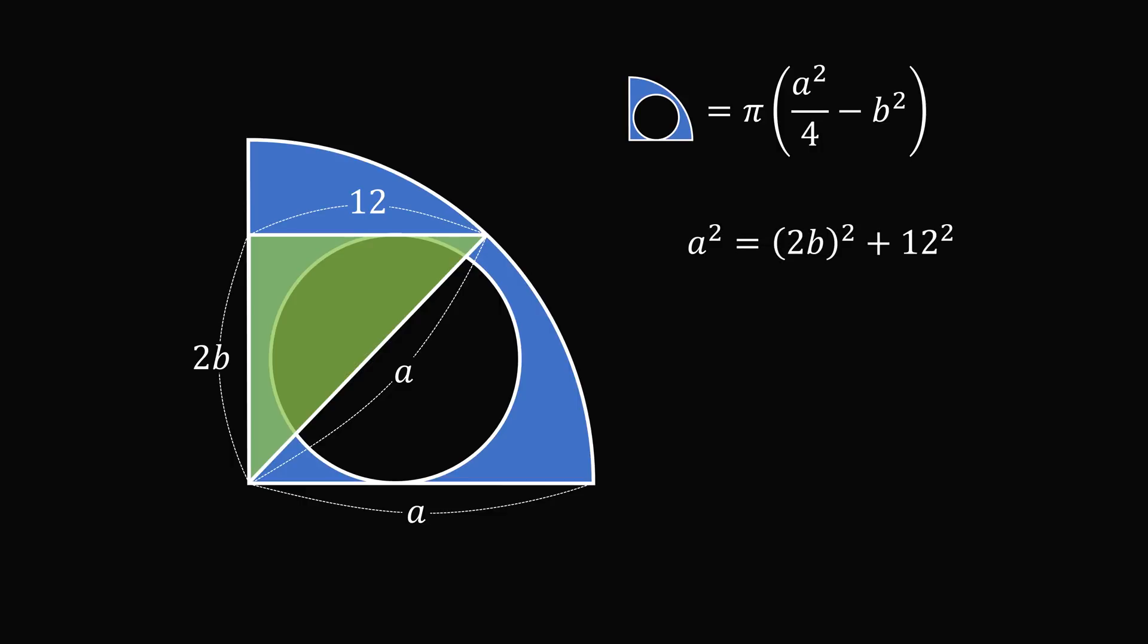Therefore, a² is equal to the quantity 2b squared plus 12 squared. Simplifying this equation, and then dividing both sides by 4, and then subtracting b² from both sides, gives a² over 4 minus b² is equal to 36.